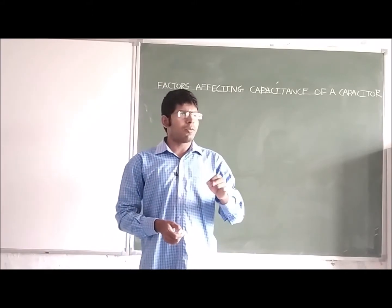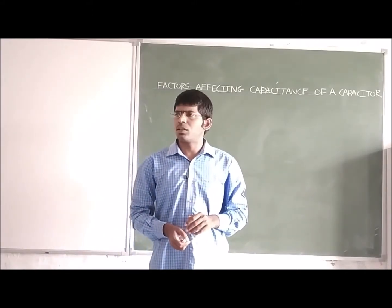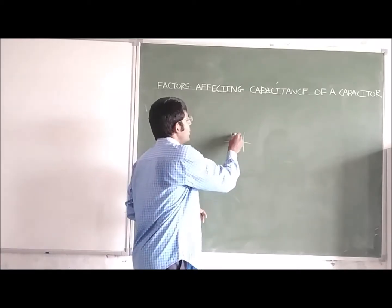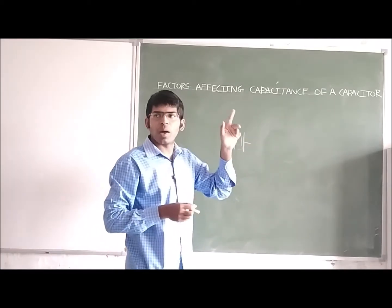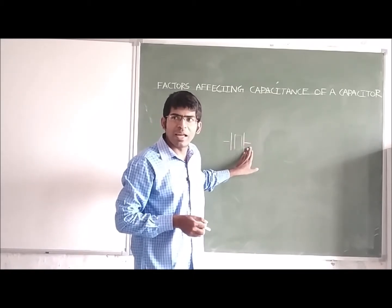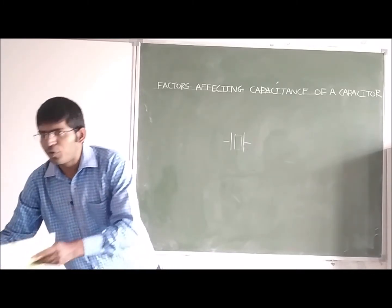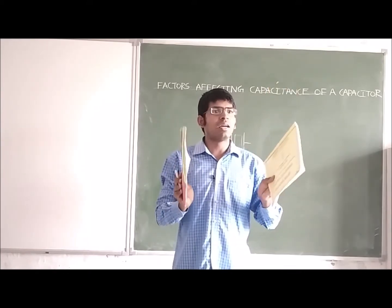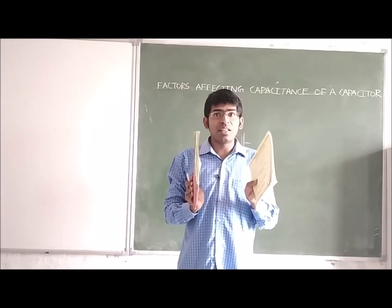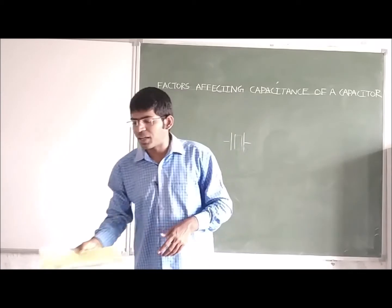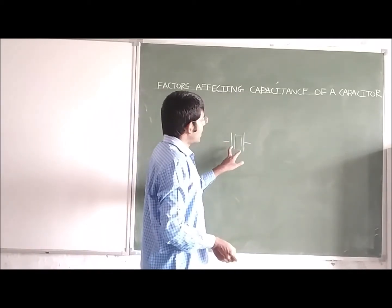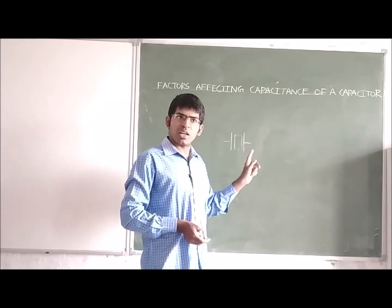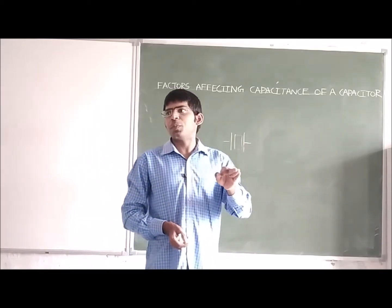We are learning about the different factors affecting the capacitance of a capacitor. If we take a parallel plate capacitor, we are using two metallic plates with a dielectric material in between them. The capacitance of this capacitor is affected by three parameters — mainly two parameters, and the third parameter is always a constant that depends on the material.